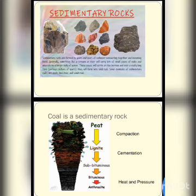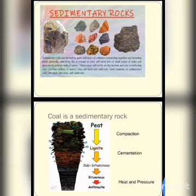Where do sedimentary rocks come from? The answer is sediments. Can you think of an example of a sedimentary rock? Examples are sandstone, shale, limestone, and conglomerate. What processes are involved in the formation of sedimentary rocks? The answer is compaction — meaning compressing sediments one above the other — and second is cementation, meaning having some kind of cement or glue between these sediments.